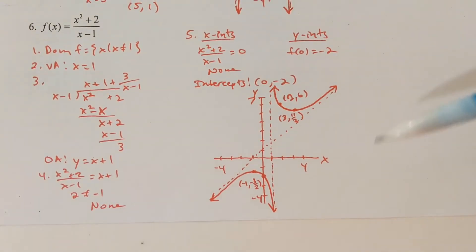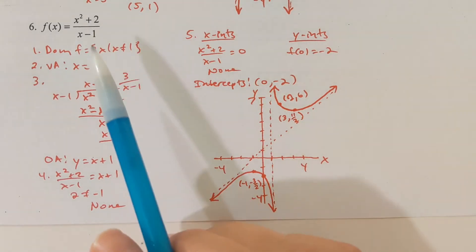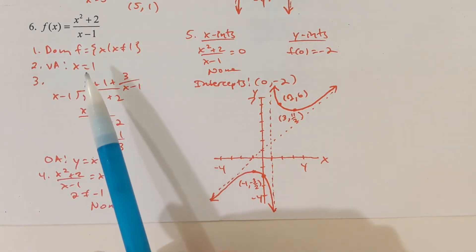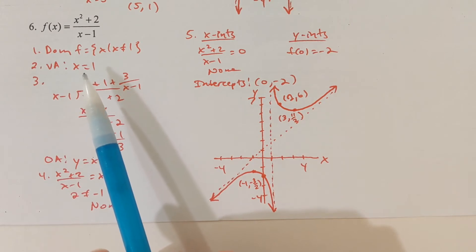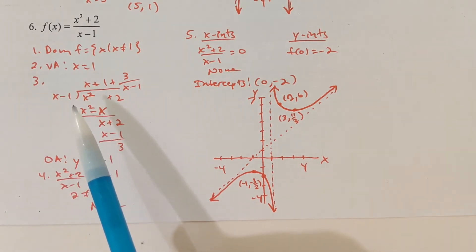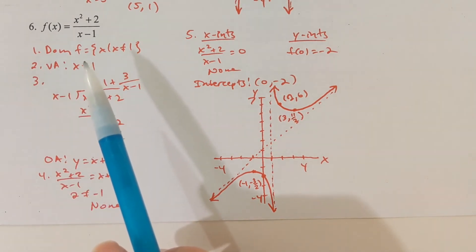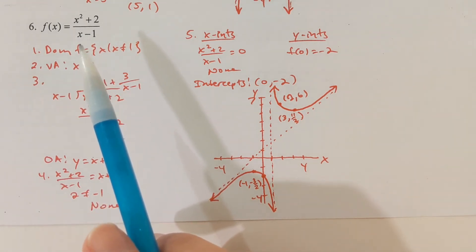Problem 6: f of x equals x squared plus 2 divided by x minus 1. The domain is all real numbers except x equals 1, giving a vertical asymptote at x equals 1. I know I'm going to have an oblique asymptote because the degree of the top is one more than the degree of the bottom.